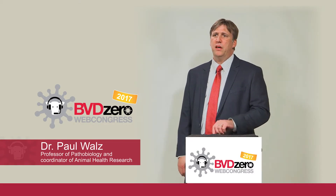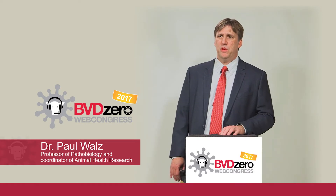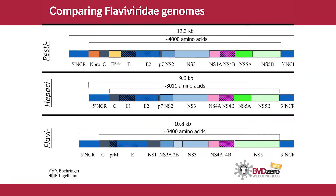Let's look at the individual genomes associated with these viruses. On this slide, you'll see the three different major groups: the Pestivirus group on the top, the Hepacivirus group in the middle, and the Flavivirus group on the bottom. All of these single-stranded positive-sense RNA viruses really only need two structures to survive: a capsid, which provides protection, and an RNA-dependent RNA polymerase — which is the NS5B in the Hepacivirus and Pestivirus groups, and the NS5 in the Flavivirus group.